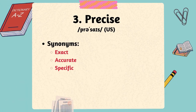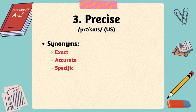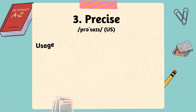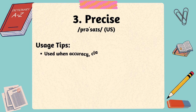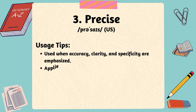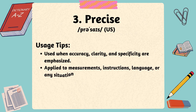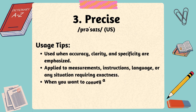Some synonyms for the word precise: exact, accurate, specific. Precise is often used when accuracy, clarity, and specificity are emphasized. It can be applied to measurements, instructions, language, or any situation requiring exactness. Consider using precise when you want to convey a high level of detail and accuracy.